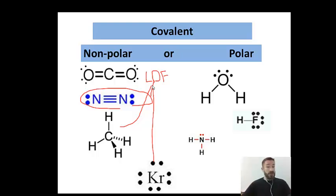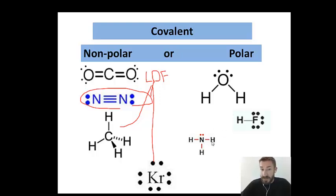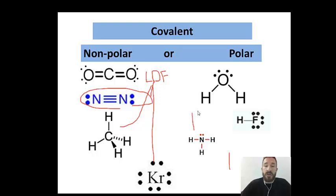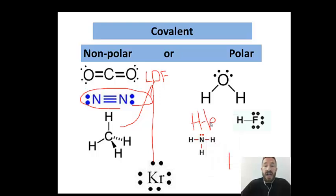On the other side you have three molecules that are polar, but notice every single one of these molecules has hydrogen attached to a very electronegative element: hydrogen next to nitrogen, hydrogen next to fluorine, hydrogen next to oxygen. Every single one of these would be what we call a hydrogen bond, because it's a hydrogen next to a very electronegative element. So a bond between one water molecule and another water molecule is a hydrogen bond.